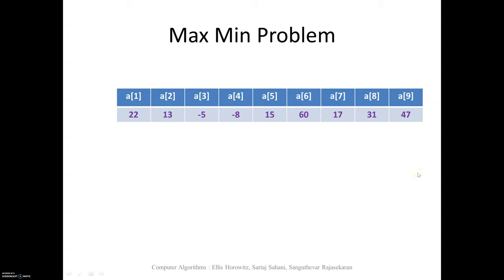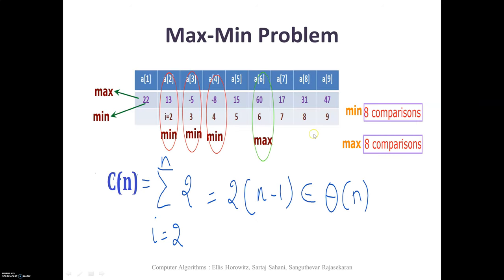The problem is to find the maximum and minimum element in a given array A. Here the first element is assumed to be the maximum element, and we compare it with the remaining elements of the array. We are finding an element greater than 22, and then max becomes 60.